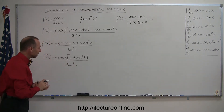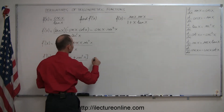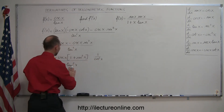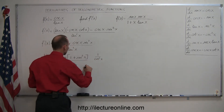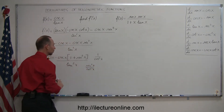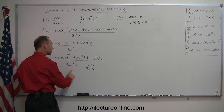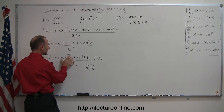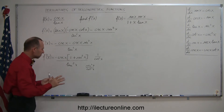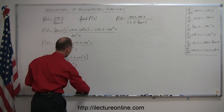To make sure we cannot simplify this anymore: remember that secant of x is 1 over cosine, so that would be 1 over cosine squared of x, and tangent squared of x is sine squared of x over cosine squared of x. Notice that in the numerator you have 1 over cosine squared, and in the denominator you also have 1 over cosine squared, so we could potentially simplify, but with the 1 plus term, I'm satisfied leaving it as is.